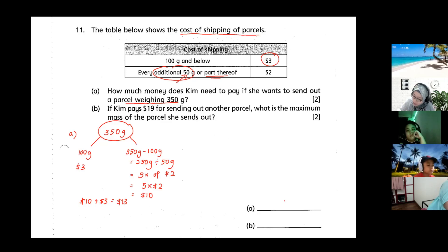That's the answer for part a. For part b, if Kim pays 19 dollars for sending out the parcel, what is the maximum mass of the parcel sent out? So now I have 19 dollars. You know that the first one is three dollars, right? So you take out three dollars and that is 100 gram.